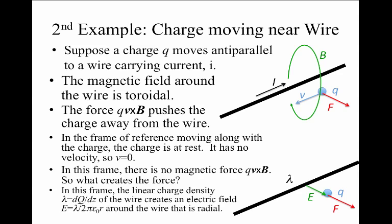Well, you would report that there's a linear charge density, an amount of charge Q per unit length of the wire. And as a result, you would say that there's an electric field, which you might remember is lambda over 2 pi epsilon naught R, that points radially away from the wire. As a result, there's a force Q times E, which again points out of the page, or radially away from the wire.